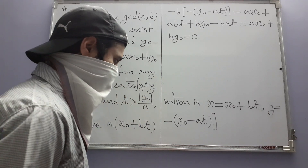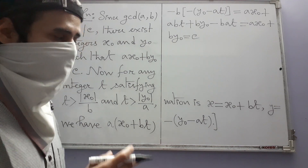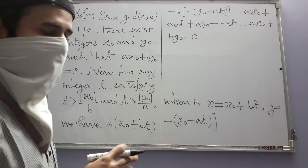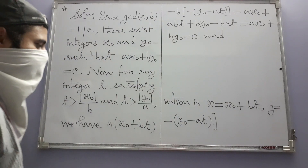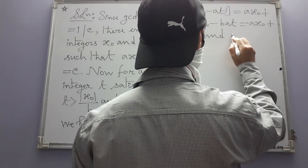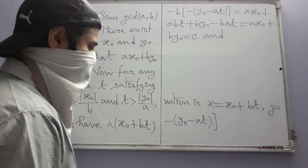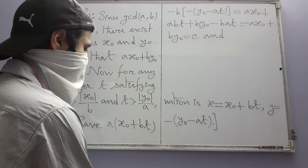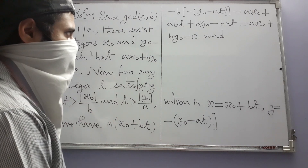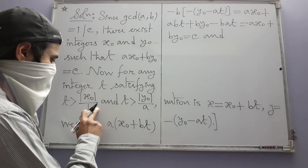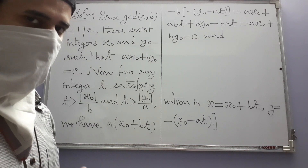The fact that t satisfies those inequalities has not yet been used. Now we use them to show that both x and y expressions give positive integers. Our aim is to show that x-naught plus bt is greater than zero and that minus(y-naught minus at) is greater than zero. Let me start from what is given and derive those positivity facts — I think that is easier to see.